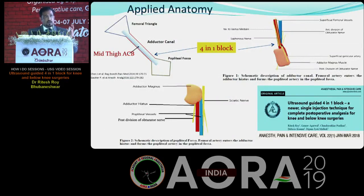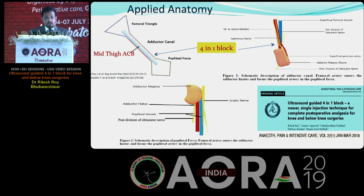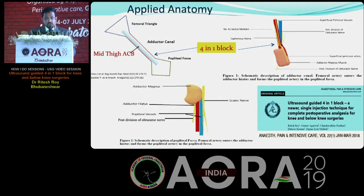The classical adductor canal block is given in the mid-thigh, but for the 4-in-1 we go almost down to the place where the superficial femoral artery dips down through the adductor hiatus into the popliteal fossa and gives off the descending genicular artery. Just above that is the injection point, where we block the nerve to vastus medialis and the saphenous nerve. The posterior division of obturator crosses the adductor hiatus into the popliteal fossa, so we catch the nerve at that place.